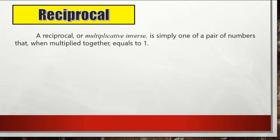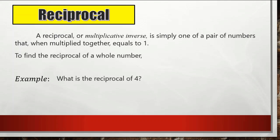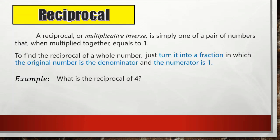Reciprocal: a reciprocal or multiplicative inverse is one of a pair of numbers that when multiplied together equals one. To find the reciprocal of a whole number, for example the reciprocal of four, we just turn it into a fraction where the original number becomes the denominator and the numerator is one.